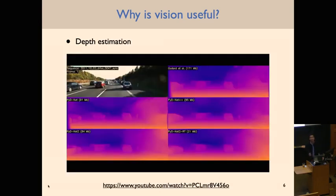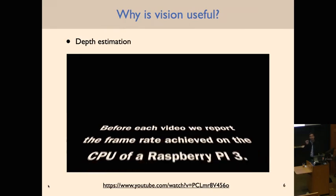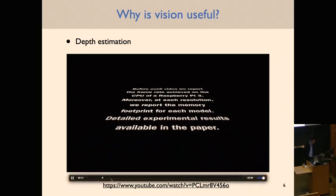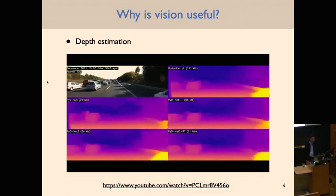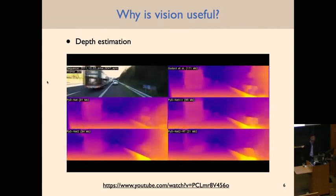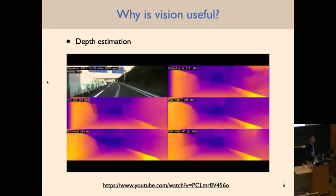From vision you can extract lots of information, which is one reason it's particularly powerful. One important piece of information is geometry — specifically depth estimation, using vision to figure out where obstacles are and distances to different points in an image. Here's an example of depth estimation in a vehicle setup, where a camera on a car estimates depth to every pixel, with color corresponding to the estimated depth.